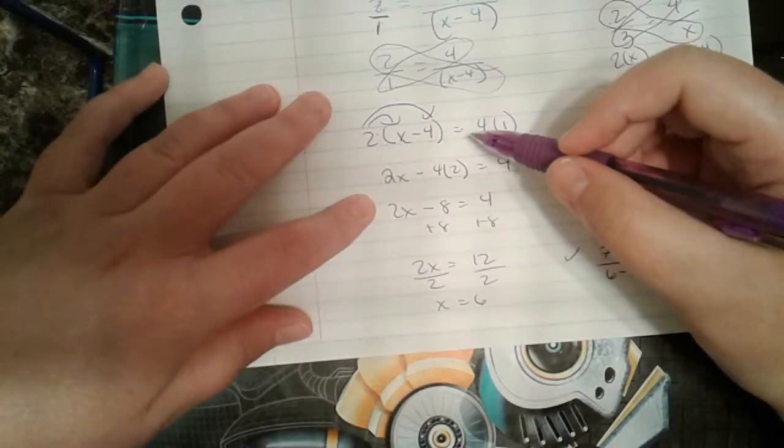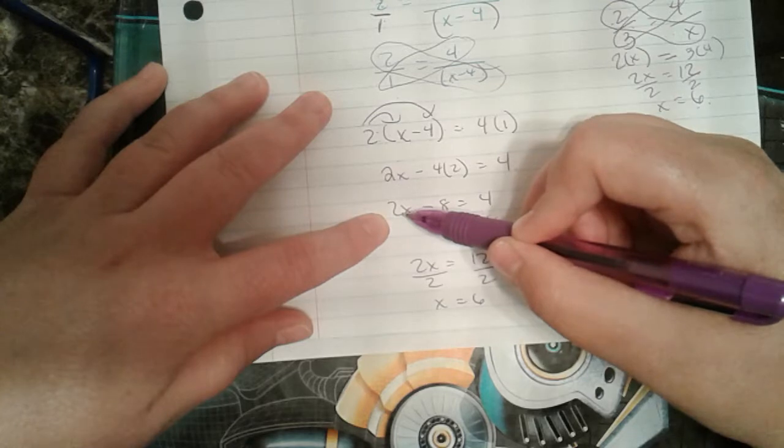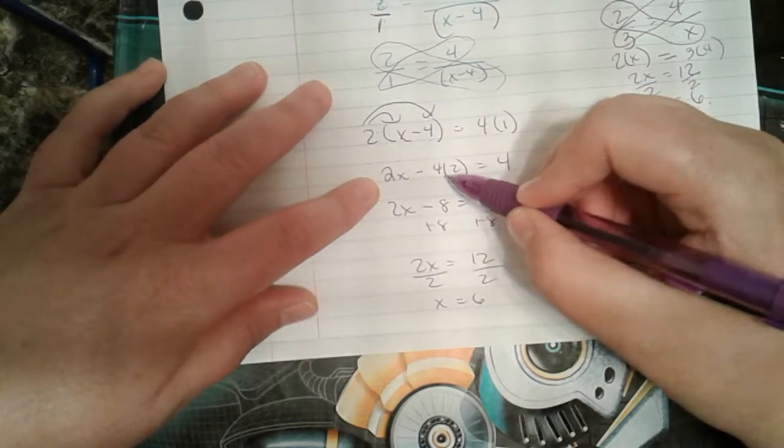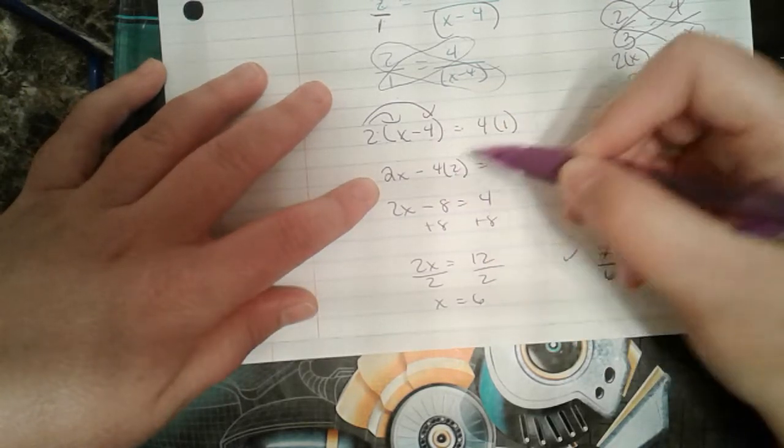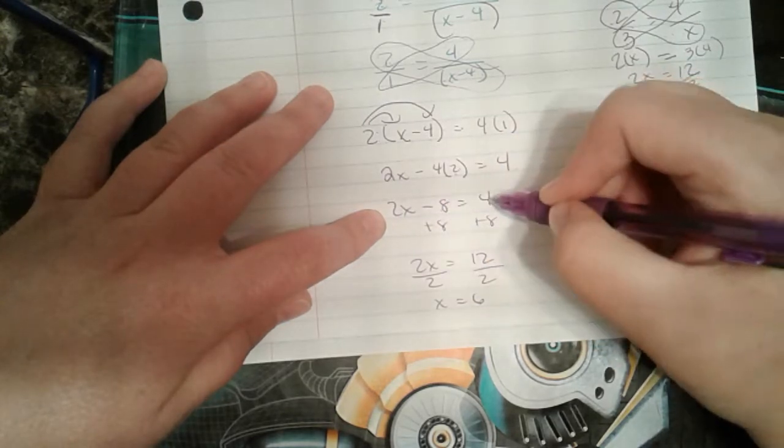So in doing so, distribute it means I multiply it. So 2 times x minus 4 times 2. So we got 2x minus 8 equals 4.